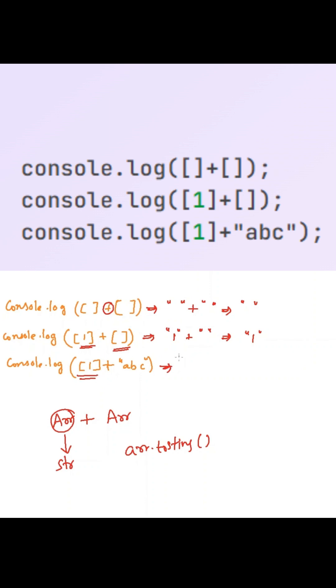Here array of 1 will be converted into string 1. And string a, b, c will concat together to form string 1, a, b, c.